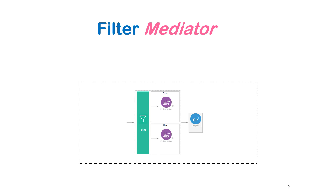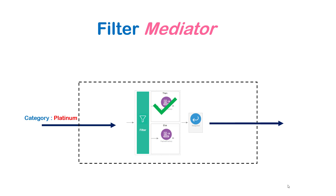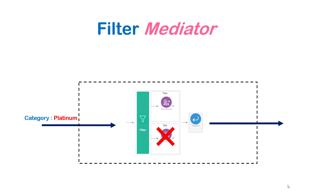We have a simple use case defined with a filter. We'll define a simple API that will have a filter mediator to check a particular condition. We'll receive a message with some customer information and the payload will have a field called category. If the category of the customer is platinum, then we are going to provide a set of discounts and the flow would return saying the customer is eligible for certain discounts. If the category value is not platinum, the flow would move to the else statement and we would receive a response saying the customer is not eligible for discounts.